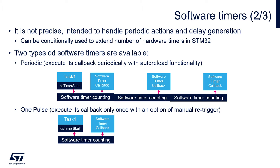Software timers are intended to handle periodic actions, and delay generation can conditionally be used to extend the number of hardware timers in STM32. Two types of software timers are available: Periodic, which executes its callback periodically and requires calling osTimerStop to stop it; and OnePulse, which executes its callback only once with an option of manual retrigger, and is stopped automatically after the first callback call.